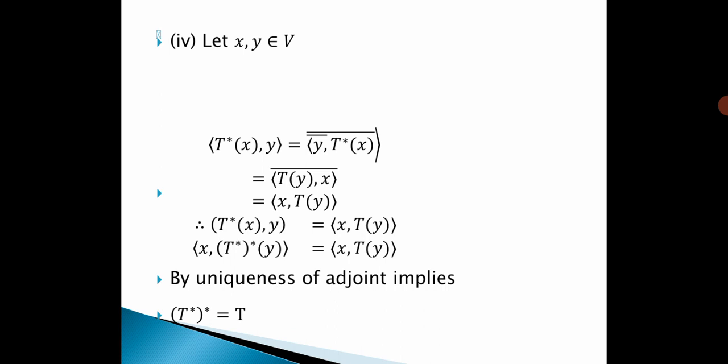Fourth property: Let x, y belong to V. The inner product of T*(x), y equals the inner product of y, T*(x) conjugated, which equals the inner product of x, T(y). Therefore, the inner product of T*(x), y equals the inner product of x, T(y). By the properties, the inner product of x, (T*)*(y) equals the inner product of x, T(y). By the uniqueness of the adjoint, (T*)* = T.